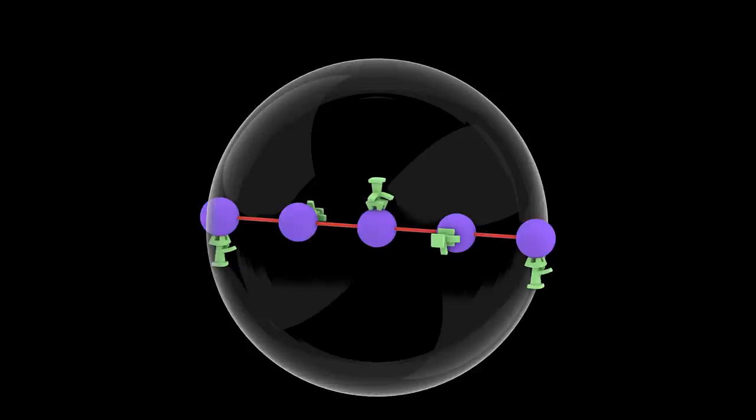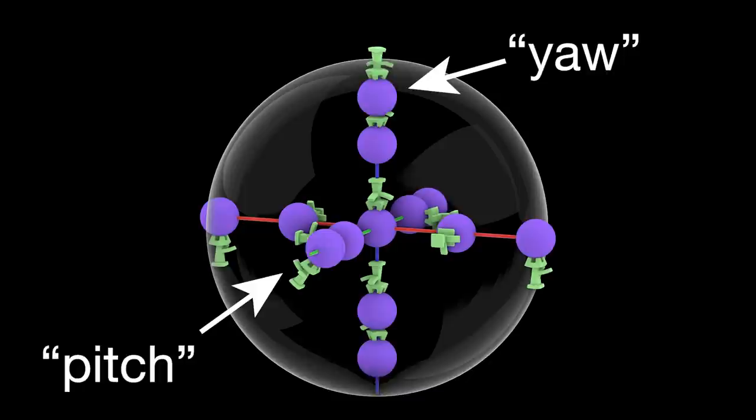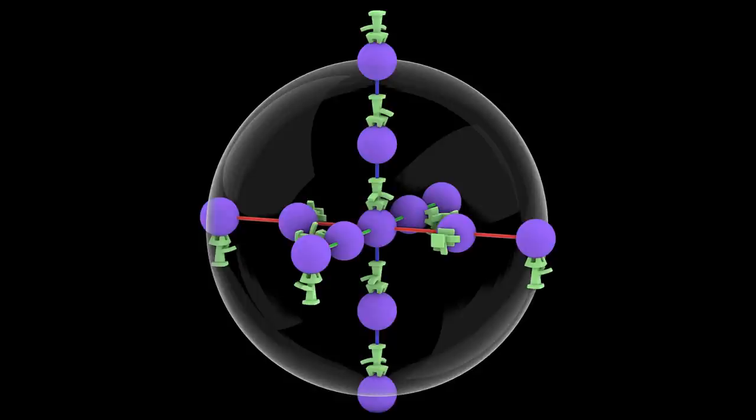We can do the same thing with rotations around the other axes. Here are all of the rotations around the y- and z-axes. Here again, rotating by pi is the same as rotating by negative pi, so we need to glue opposite boundary points of the ball together.